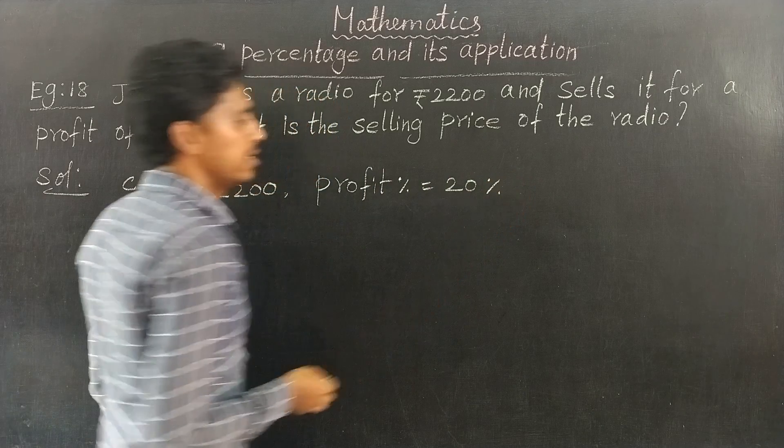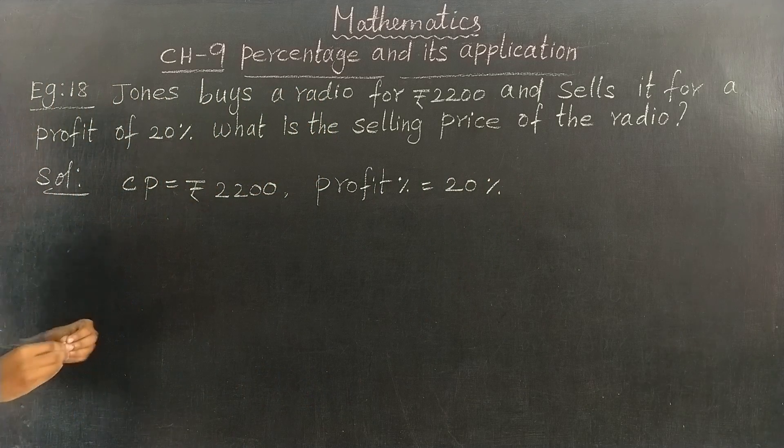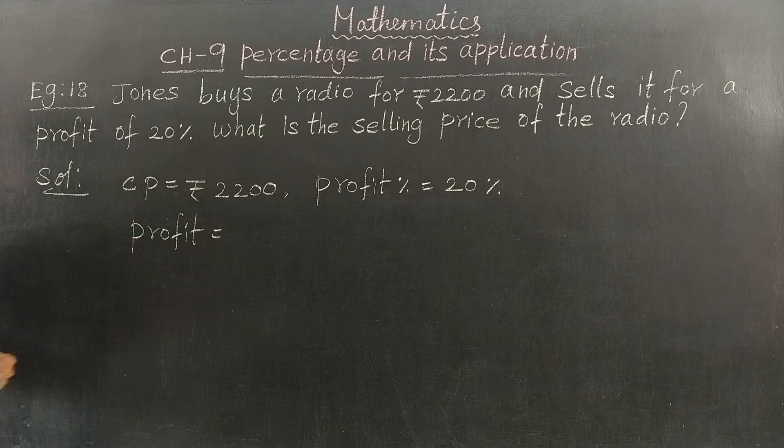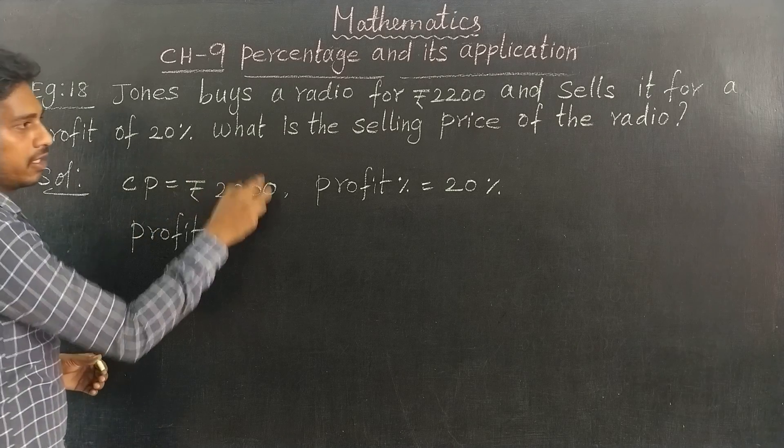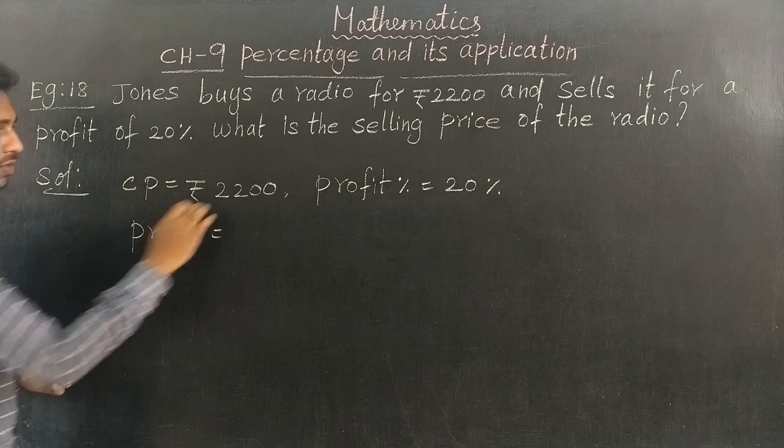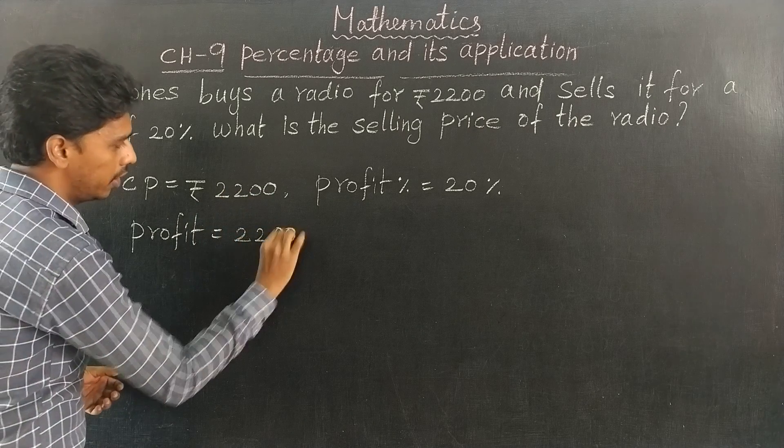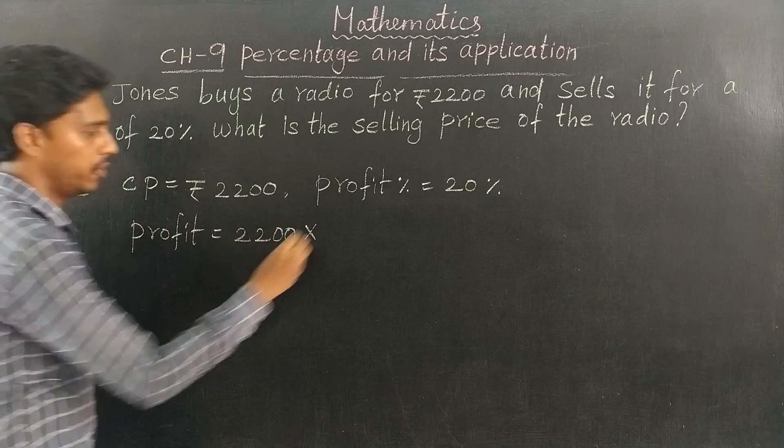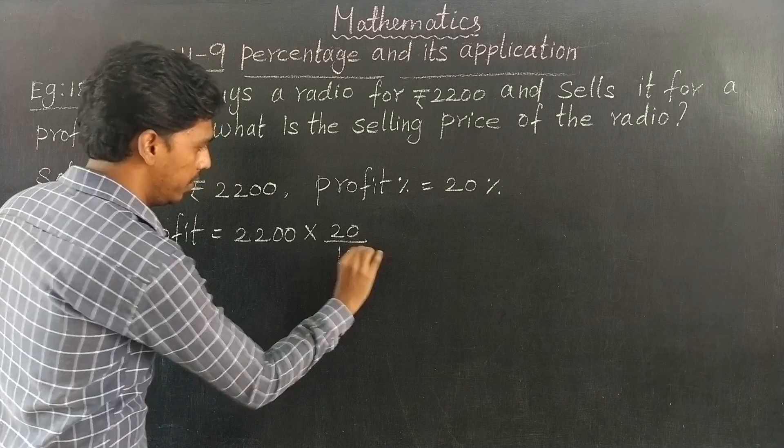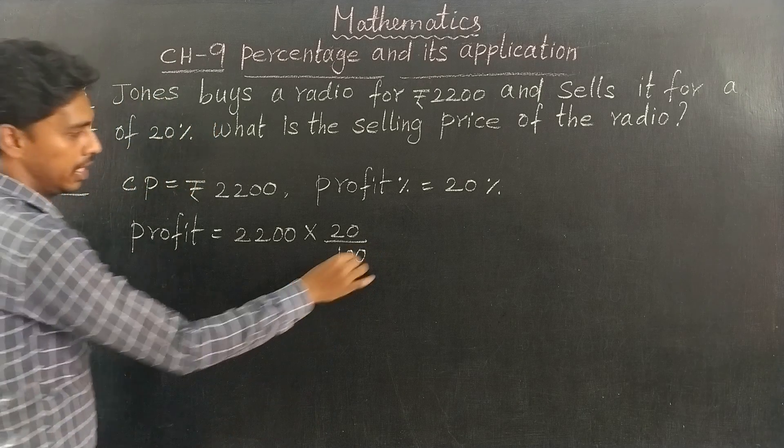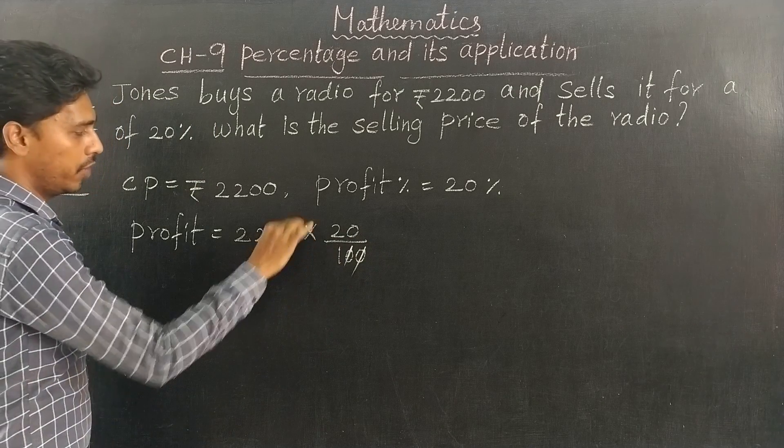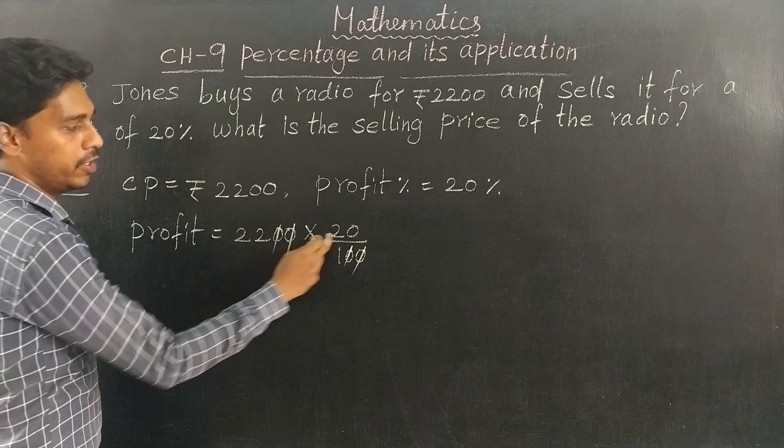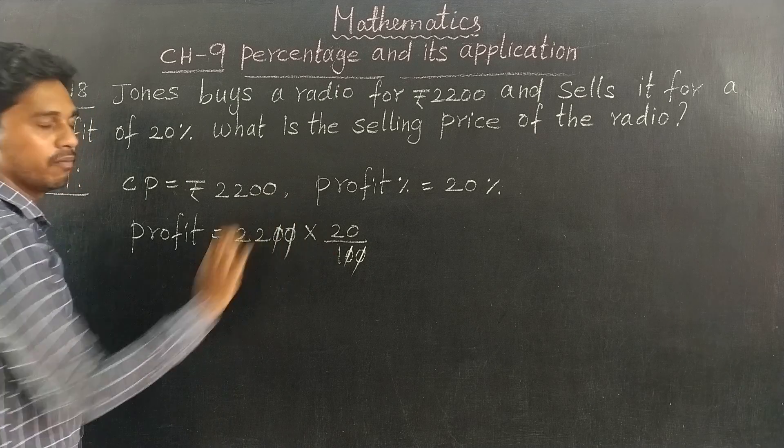Profit is 20% of cost price, 20% of 2200. In this amount, 20 by 100. Numerator 20, cancel. 22 into 20, multiply.